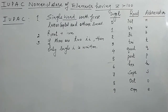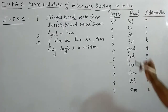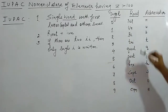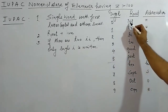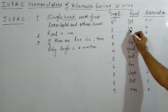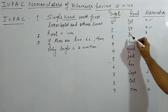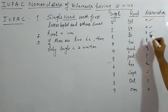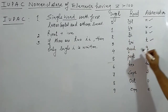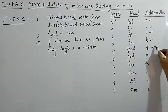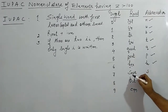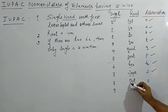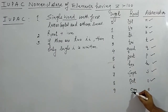When writing the symbol, you don't write the full root — you write only the abbreviation, which is the first letter of each root. So: nil → n, un → u, bi → b, tri → t, quad → q, pent → p, hex → h, sept → s, oct → o, enn → e. Learn these very well.